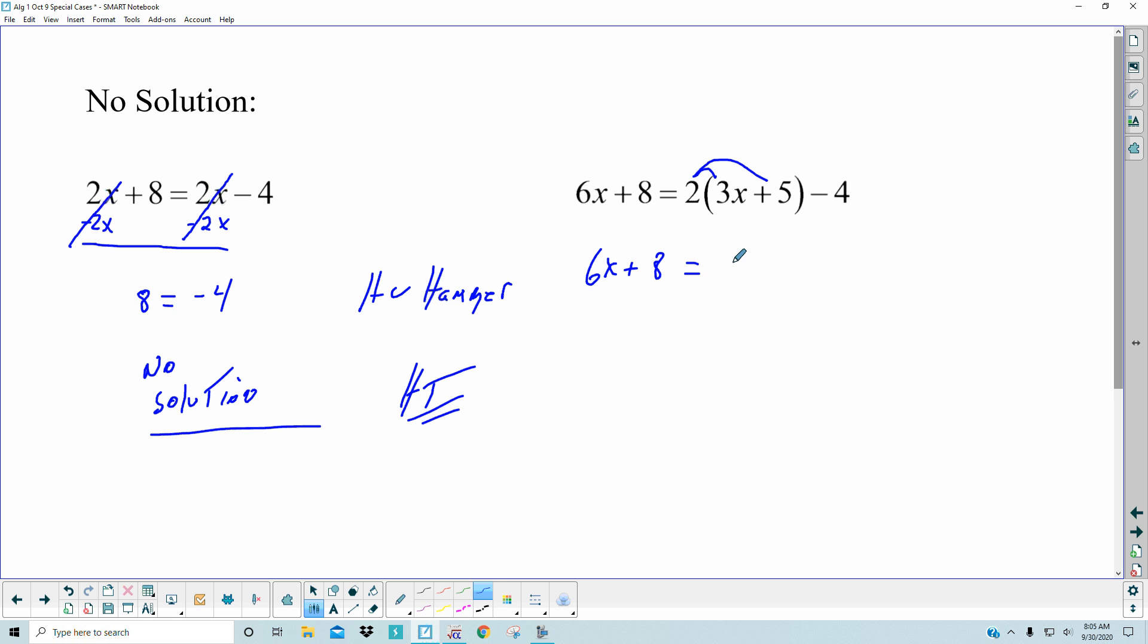So here we go. 6x plus 8 is equal to 6x plus 6. And then if I subtract the 6x from both sides, you get 8 equals 6, which is never true. So no solution, or if you want to bring a smile on my face, HT for Hammer Time. No solution would be your answer.